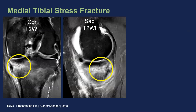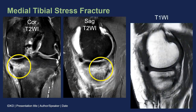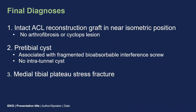The final abnormality in this patient — recall she also had pain in the posterior proximal medial leg — is a medial tibial stress fracture. We recognize this by referring to T1-weighted images, which are most specific for marrow abnormalities, and seeing a low signal intensity stress fracture line. In conclusion, this patient has an intact ACL reconstruction graft in near-isometric position, no arthrofibrosis or cyclops lesion, a pre-tibial cyst associated with fragmentation of the bioabsorbable interference screw with no cyst within the tibial tunnel, and a stress fracture of the medial tibial plateau.